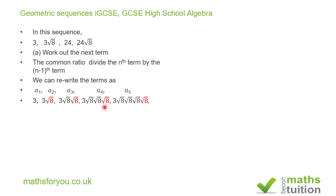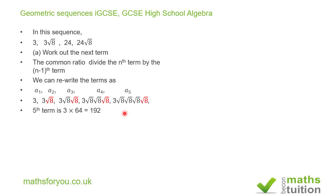Now all we need to do for the fifth term is to multiply the fourth term by root 8. So we have 3 times root 8 times root 8 times root 8 times root 8 times root 8. We know that root 8 times root 8 is 8, so root 8 to the power of four is 64. Therefore 64 times 3 gives us 192. So the fifth term is 192.